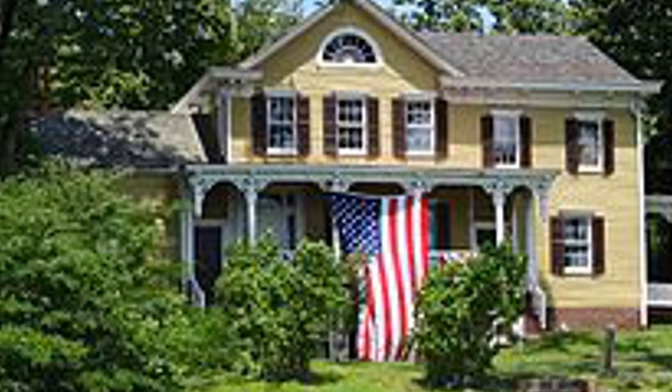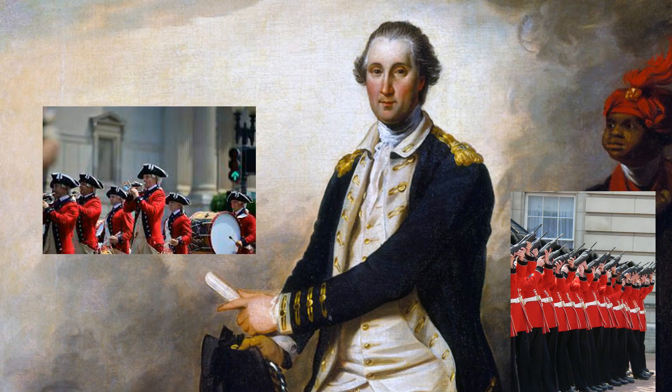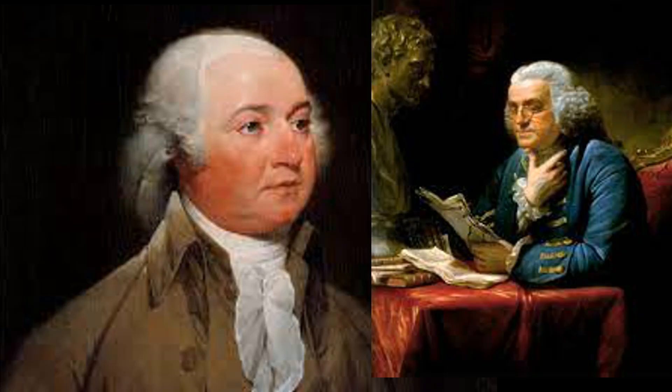In 1778, from his headquarters at Ross Hall near New Brunswick, New Jersey, General George Washington marked July 4th with a double ration of rum for his soldiers and an artillery salute, feu de joie. Across the Atlantic Ocean, Ambassadors John Adams and Benjamin Franklin held a dinner for their fellow Americans in Paris, France.